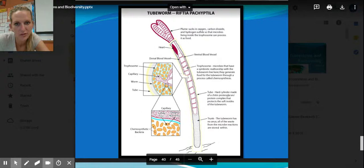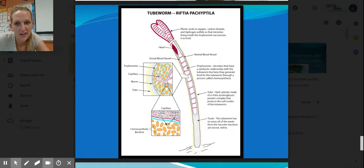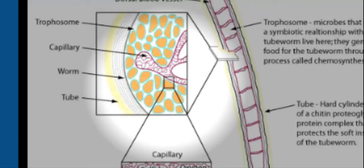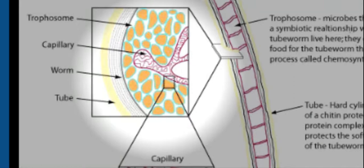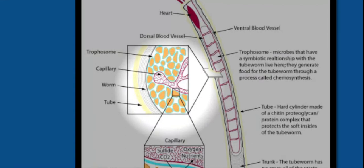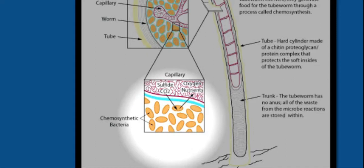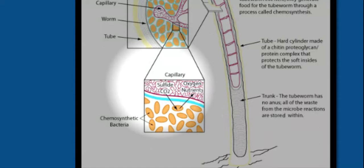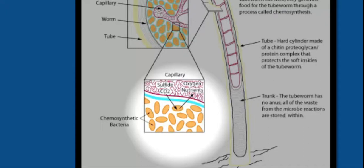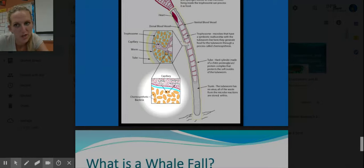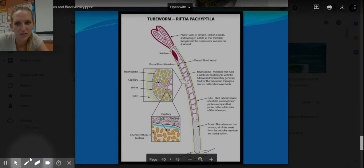Looking at the cross-section of the tube worm: inside, chemosynthetic bacteria perform chemosynthesis and synthesize organic materials. They get sulfide and carbon dioxide from diffusion out of the tube worm's bloodstream. Once they create organic material, they release oxygen as a byproduct, which goes back into the tube worm's bloodstream. So the tube worm receives both nutrients and oxygen, enabling respiration.